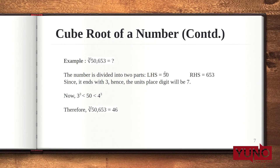Now, 50 lies between the cubes of 3 and 4. Considering the number at the lower end, that means 3, the cube root will be 37. Note: 46 is written by mistake in the video. So the cube root of 50,653 is 37.